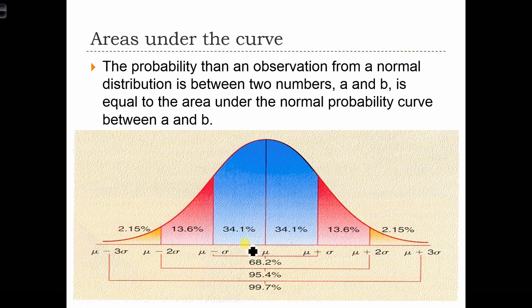So for example, if we had a value here and a value here, and we wanted to know what's the probability of obtaining, of the random variable that's normally distributed, obtaining a value between A and B, well, that probability is going to be equal to the area of this shape.